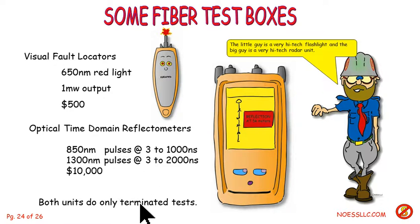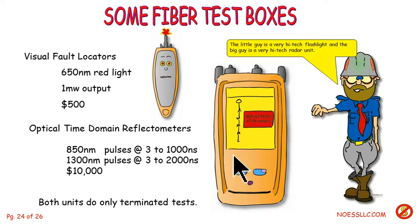Both these units only do terminated tests — you're going to actually have to pull the fiber off. So you can't do this on a working system. I've found no place anywhere that suggests you can do bridged testing on fiber systems. You can do all kinds of testing at the electronic side — the multiplexing electronic side — but I don't know of anywhere you can do it in the fiber itself.